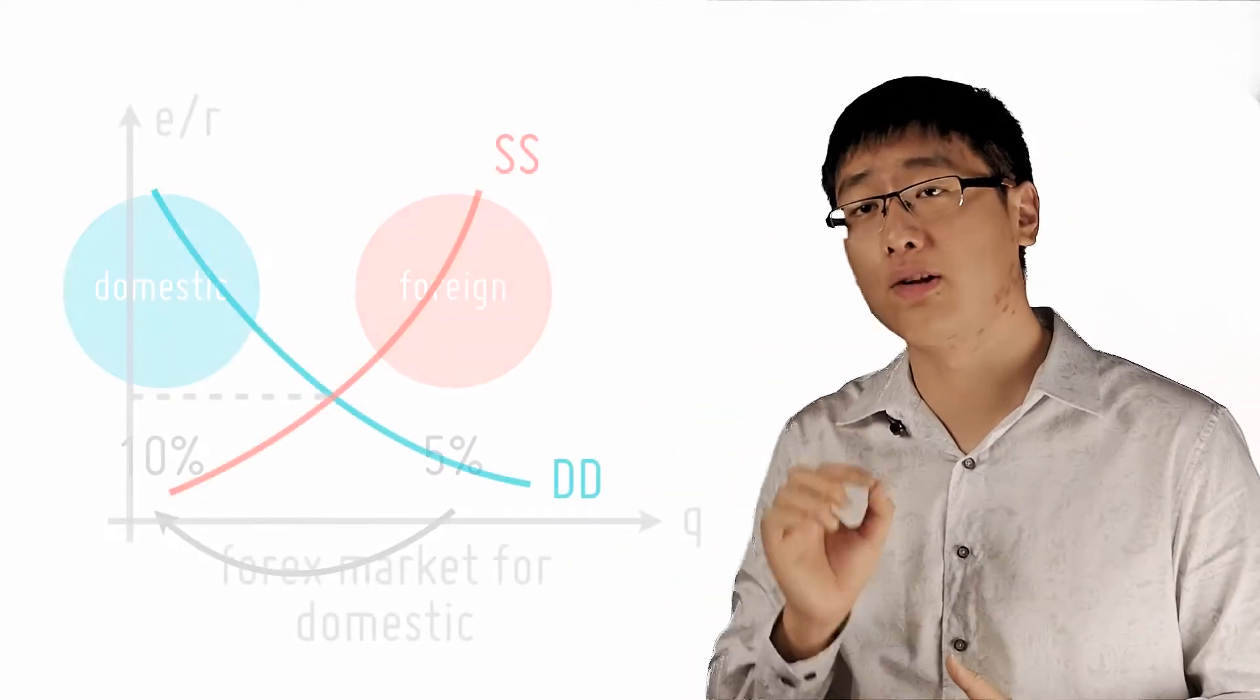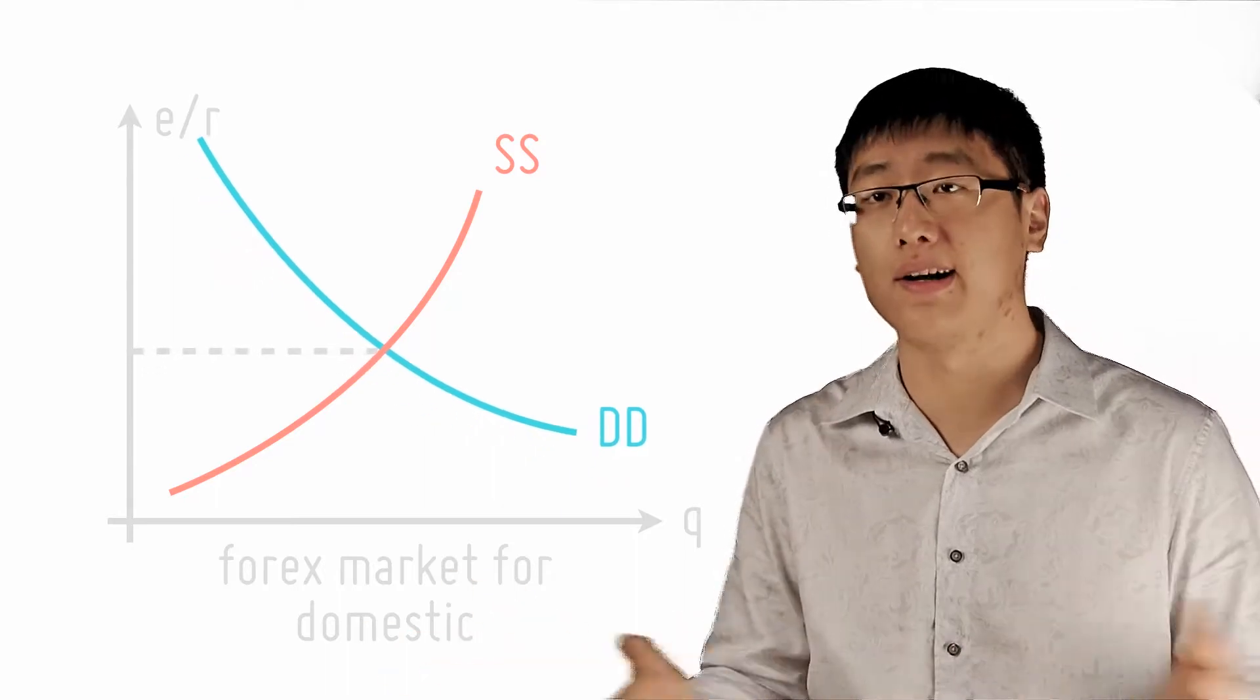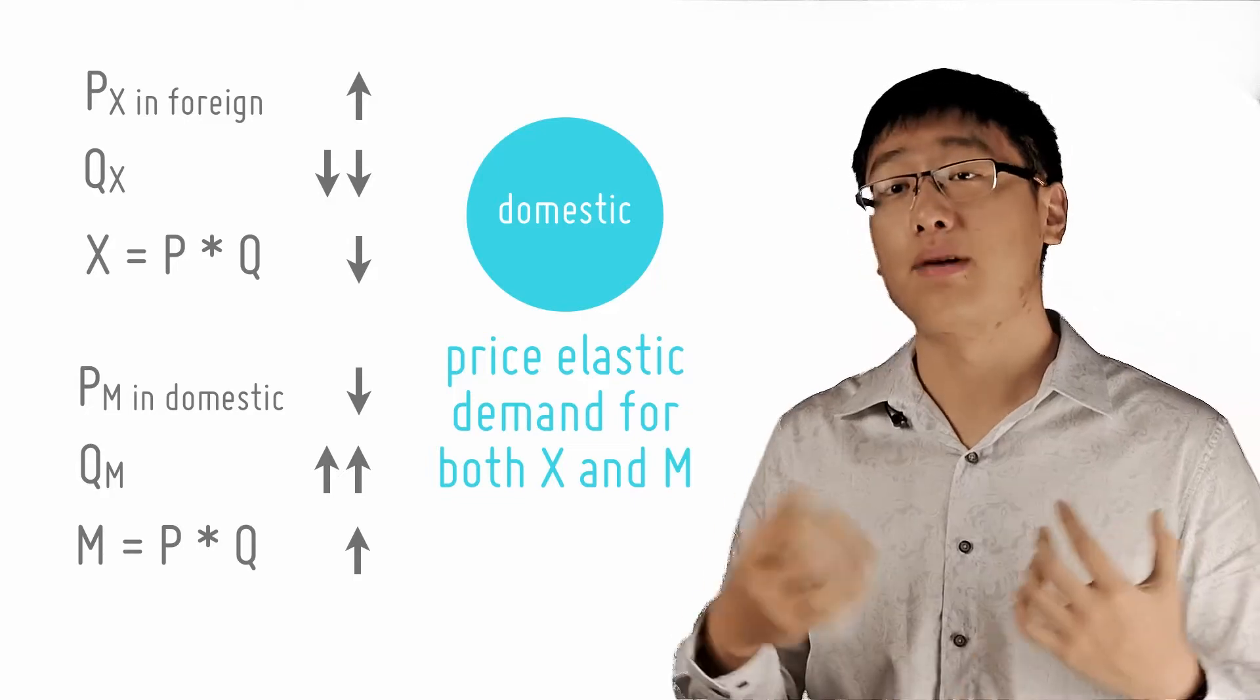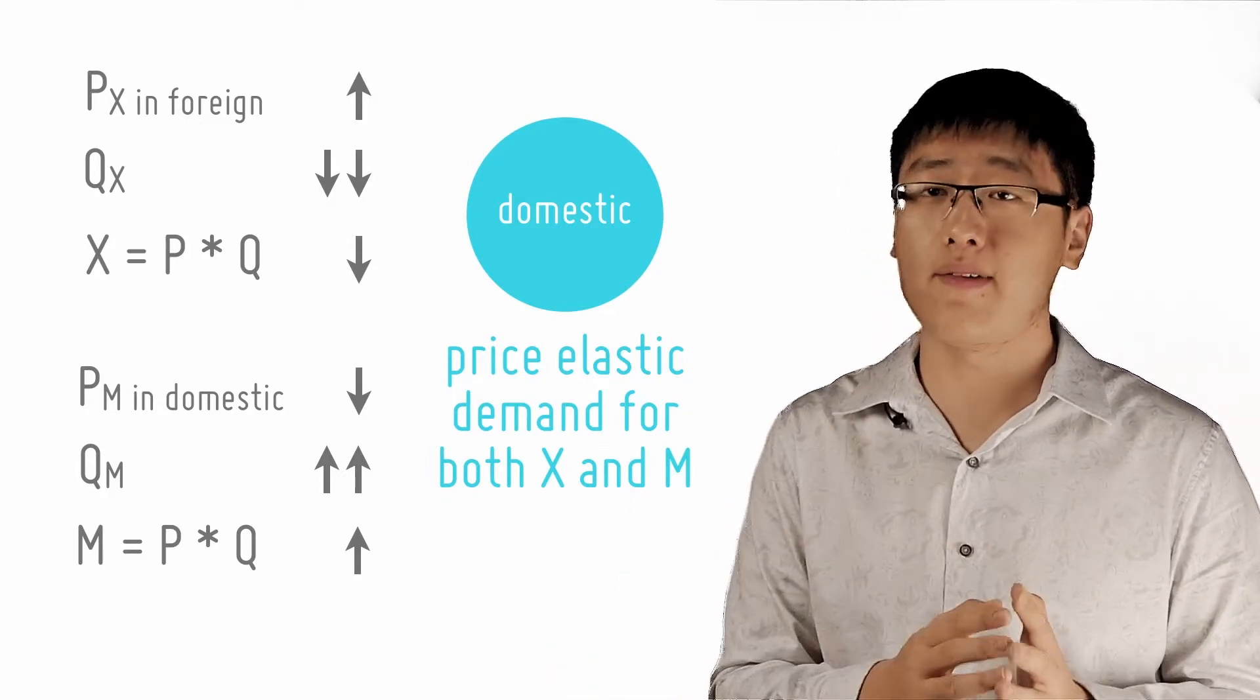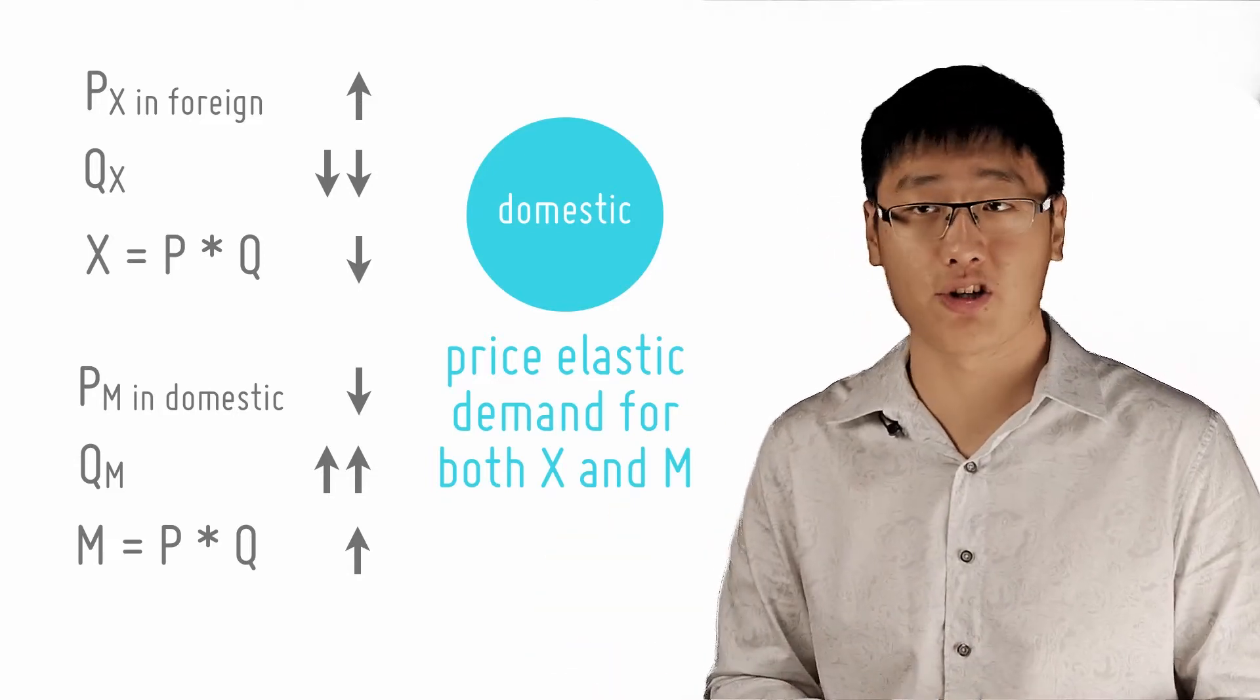When this happens, the demand for domestic currency increases, and domestic currency appreciates against the foreign currency. The price of exports in foreign currency increases, price of imports in domestic currency decreases, quantity of exports decrease more than proportionately, quantity of imports increase more than proportionately.